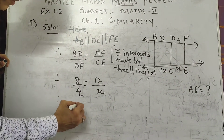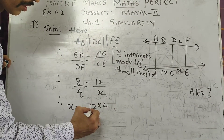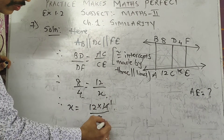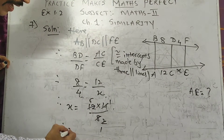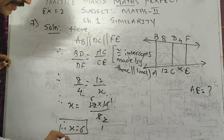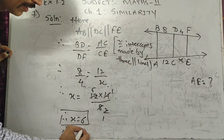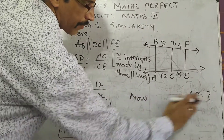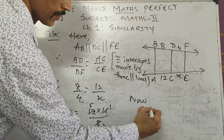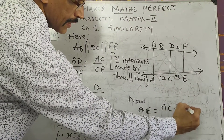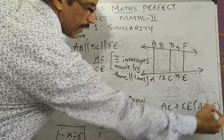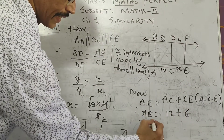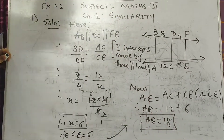Simplifying: X equals 6, so CE equals 6. Now we want the value of AE. Since A, C, E are collinear points, AE equals AC plus CE equals 12 plus 6. Therefore AE is equal to 18.